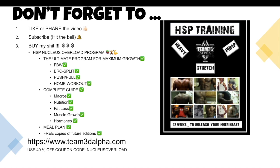And buy my HSP Nucleus Overload training program. It's the ultimate program for maximum muscle growth. It includes full body workout splits, bro splits, push-pull, home workouts. You name it. Also comes with a complete guide for macros, nutrition, fat loss, muscle growth, hormones, including a meal plan. It's pretty much all my 16 years of experience condensed into one book. You're also going to get free copies of any future edition, so visit Team3DAlpha.com and you can use the 40% off coupon code Nucleus Overload, or you could just buy it at full price. All right guys, I'm out of here.